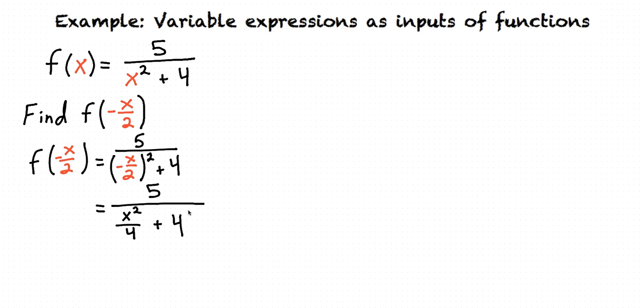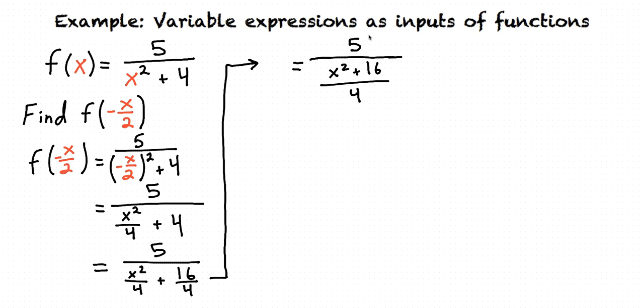And now our next step will be to combine this whole denominator into a single fraction. We can do that by rewriting 4 as 16 fourths. 16 divided by 4 is 4. But we've rewritten it this way so that our two terms have the same denominator, so that we can now rewrite them as 5 over x squared plus 16 over 4. Since this 5 is divided by a fraction, we can rewrite that as multiplying by the reciprocal of that fraction.